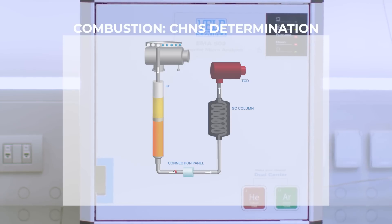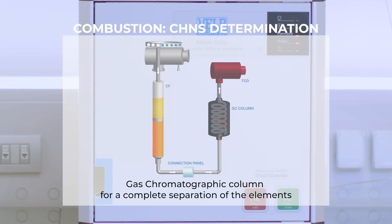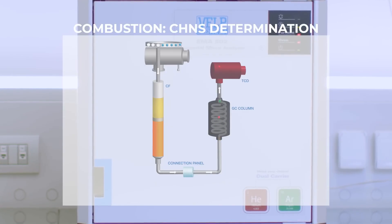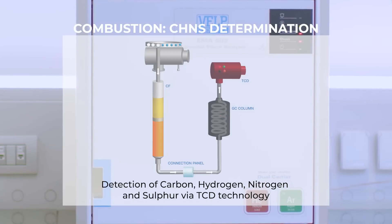The flow passes through the connection panel and then reaches the gas chromatographic column oven, which ensures homogeneous and modular temperature, leading to a complete separation of all the elements for the final detection by TCD.